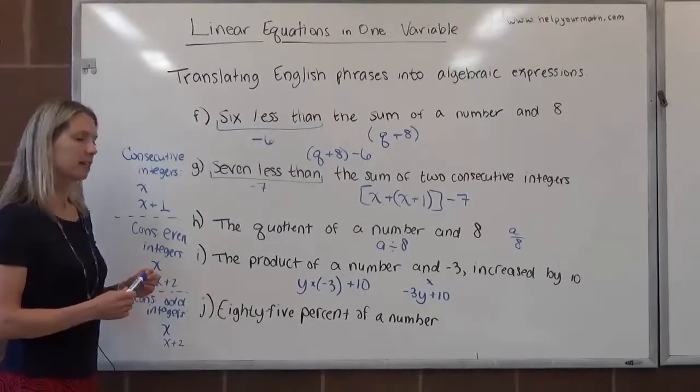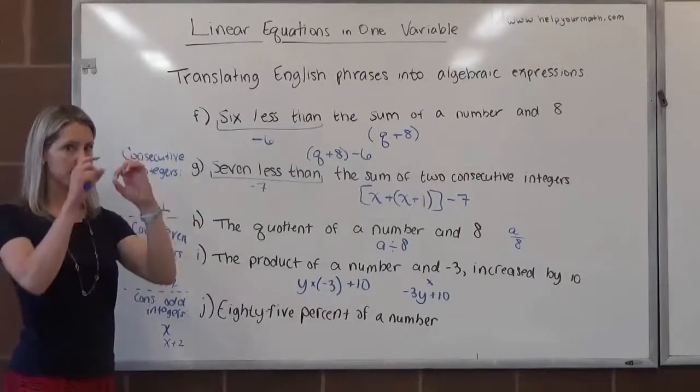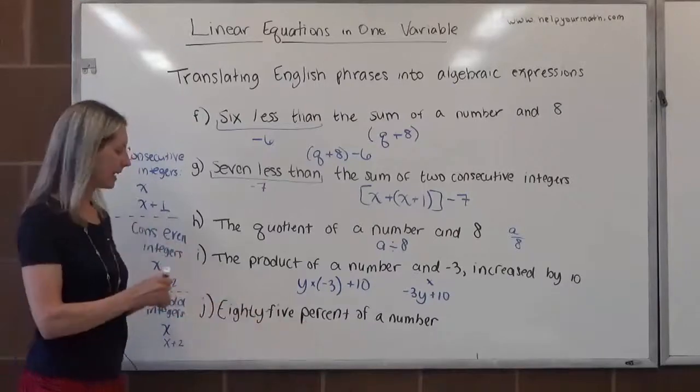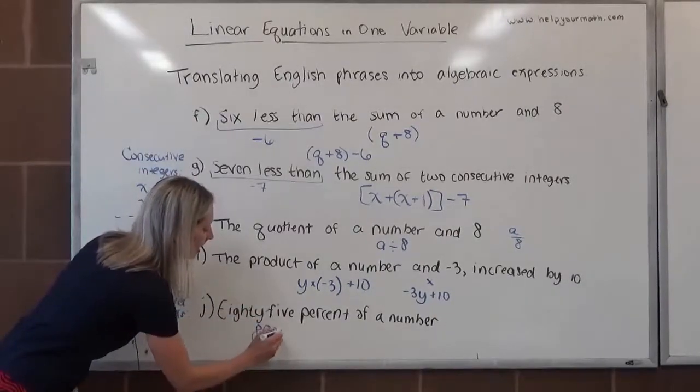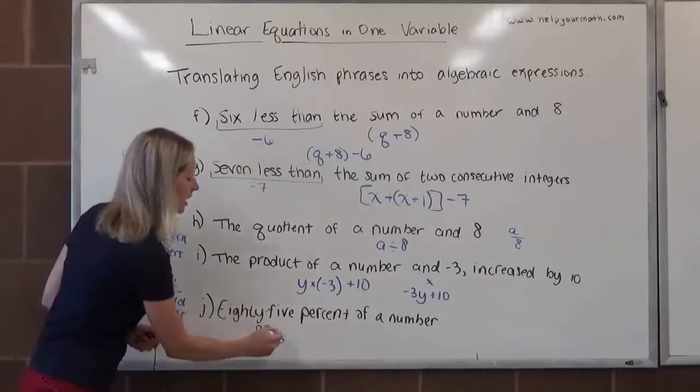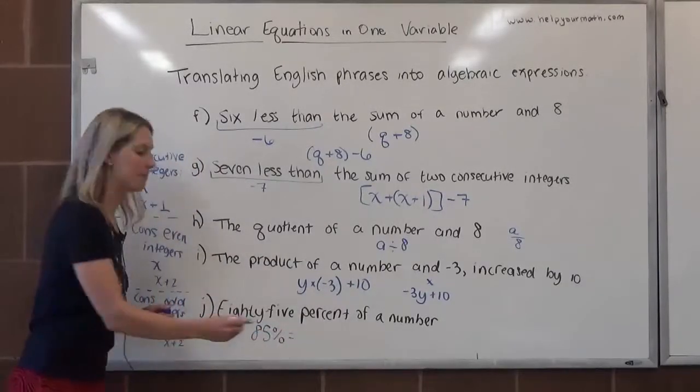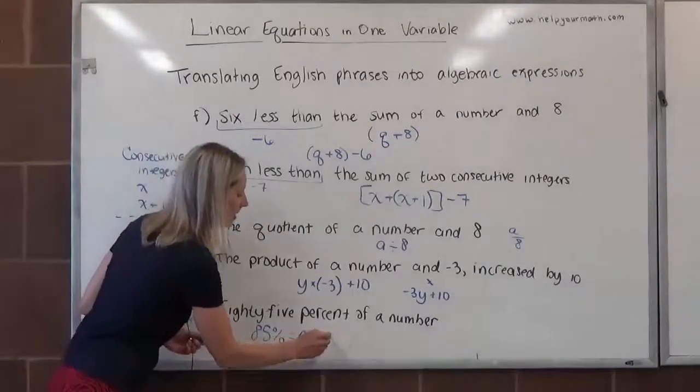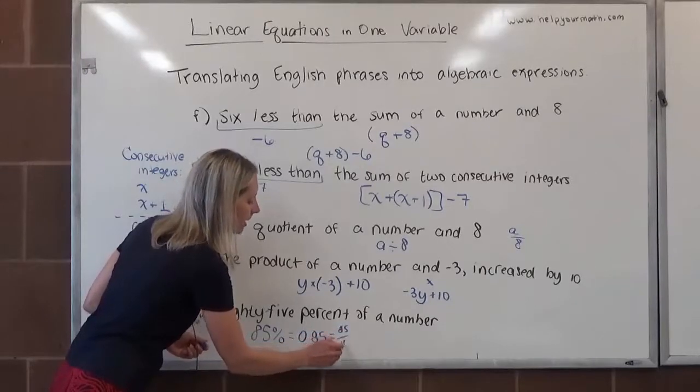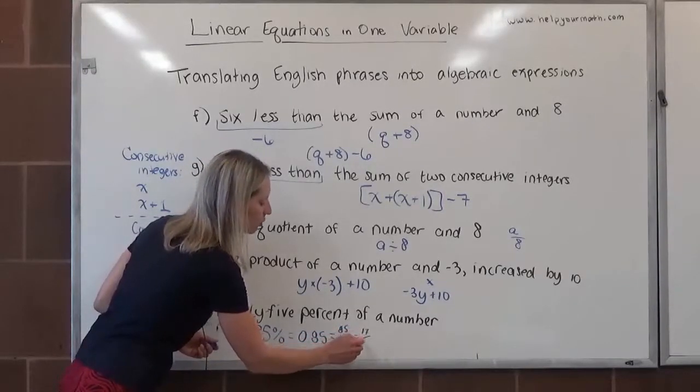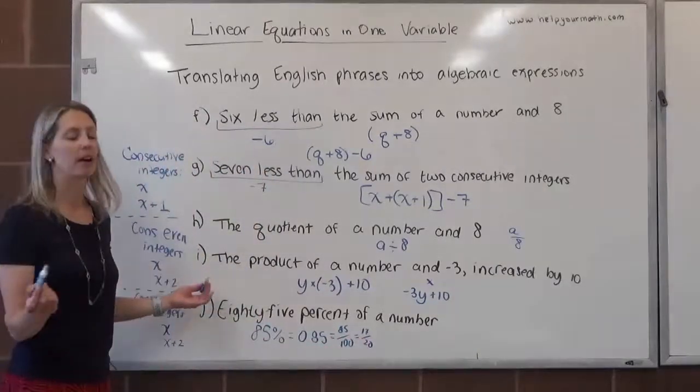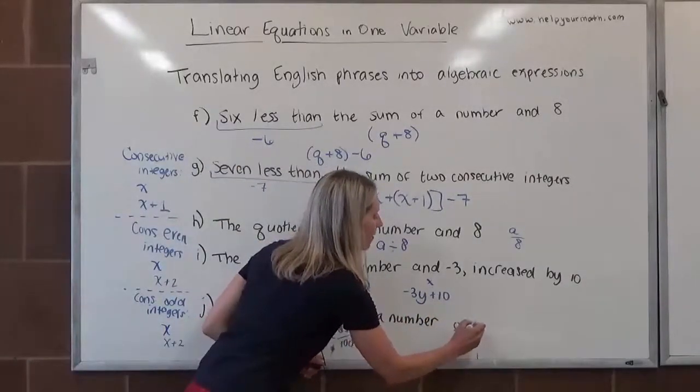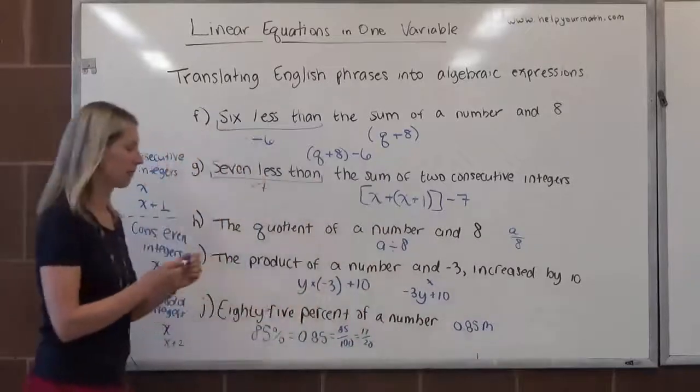Lastly, letter j, 85% of a number. It's tempting to want to use the percent sign, but it's technically, mathematically not appropriate here. What we do is we would take 85% and we would convert it to something that it is equivalent to, either the decimal form, in which case you would take 85 and divide by 100, which would give you 0.85, or you can convert it to its fraction, which is where you take the 85 and you actually put it over 100. And then from there, you might want to simplify and you'd get 17 over 20. Most people opt for the decimal, and that's very appropriate in this situation. So 85% of a number, that would be 0.85 times m or x or q or whatever you want to use there.